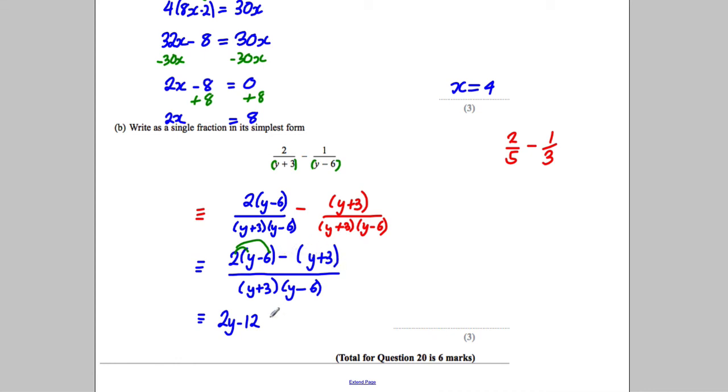So we're taking away a y and taking away a 3, so subtract y and subtract 3, all divided by (y + 3)(y - 6). Therefore, on the top, if we keep going with this, 2y take away y is 1y. Negative 12 and subtract another 3 is negative 15, all over (y + 3)(y - 6).